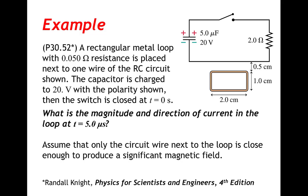A rectangular metal loop with 0.050 ohms of resistance is placed next to one wire of the RC circuit shown. The capacitor is charged to 20 volts with the polarity shown, then the switch is closed at t equals zero seconds.